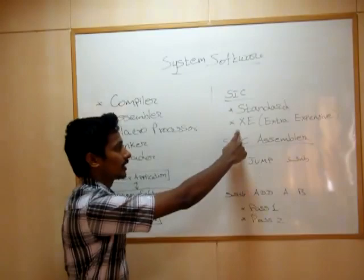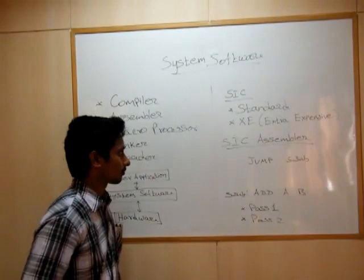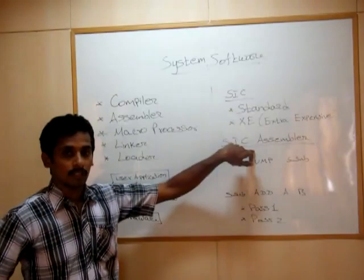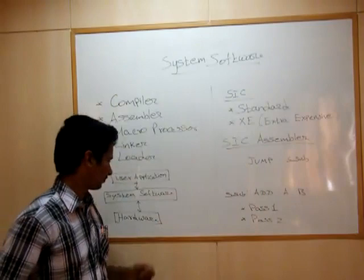Anything which is written for SIC can be executable in the XE SIC — it is upward compatibility. The SIC Assembler is mainly used to convert any user code into the assembly level code that needs to be executed inside the SIC computer.